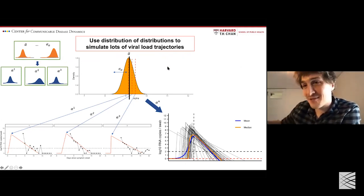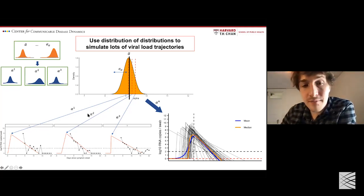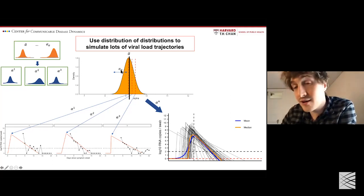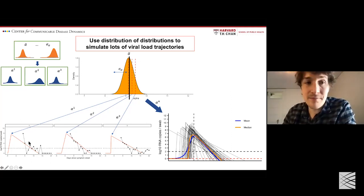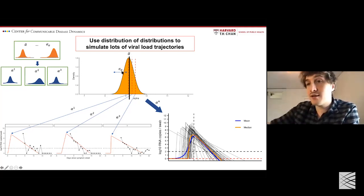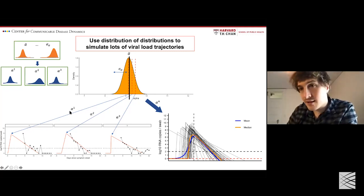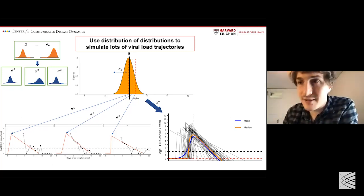Each individual has an alpha dictating the height of the viral trajectory, drawn from a population distribution described by mean alpha-bar and standard deviation sigma-alpha. All parameters are estimated simultaneously conditional on individual-level data. That gives us a distribution on alpha-bar and sigma-alpha that we can use to simulate new individuals — using data from a few individuals to come up with distributions from which we can simulate an arbitrary number of individuals.